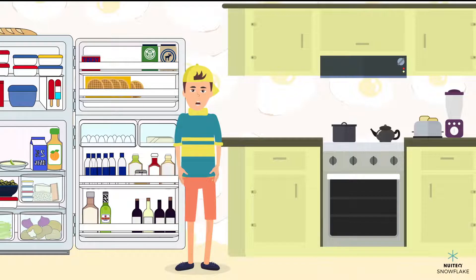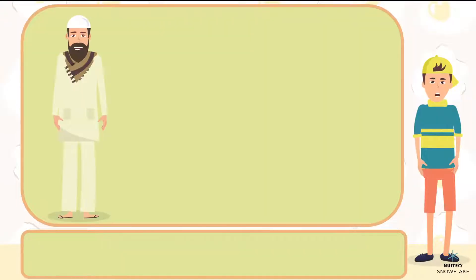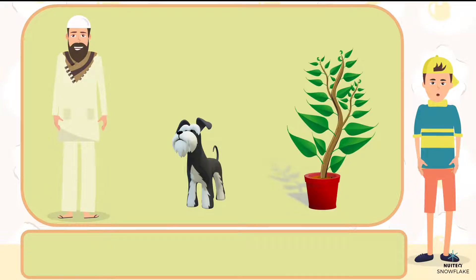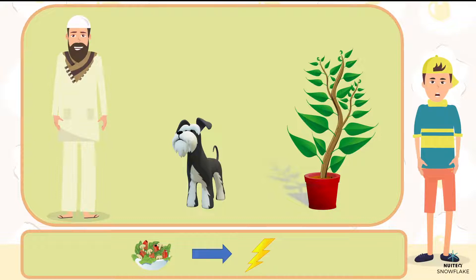All living things need to eat in order to make energy to live. Humans, animals, and even plants need food. That food is used to help bodies grow, move, and to stay warm by converting the food into energy. All of our food, from that healthy salad to the indulgent bowl of chocolate ice cream, begins with the sun.